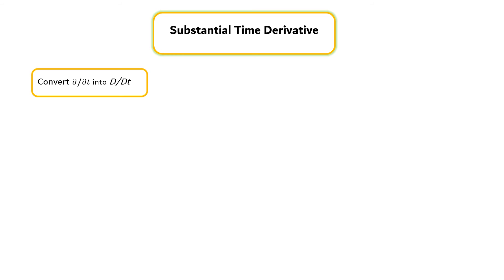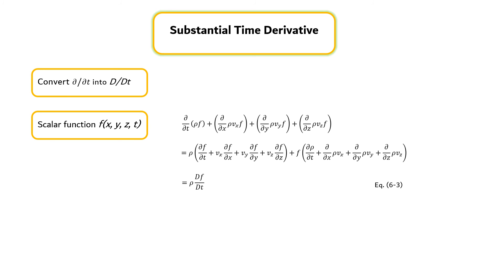Now, we need to know how to convert ∂ per ∂t into d per dt. For any scalar function f, the equation can be expressed by Equation 6.3.